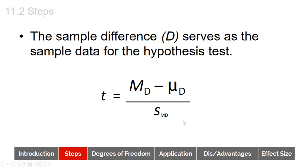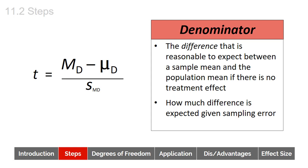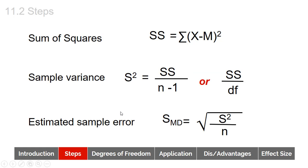Then we need to figure out our denominator — our standard error. We have the difference that we're seeing in our data, and this would be the difference that would be expected. The numerator measures the difference between the sample mean and the hypothesized population mean, which is zero. The denominator is the difference that is reasonable to expect between a sample mean and the population mean if there's no treatment effect — in other words, how much difference is expected given normal sampling error. This is what we're seeing in our data; this is expected error.